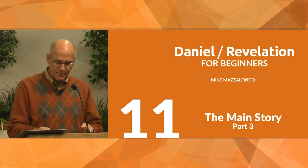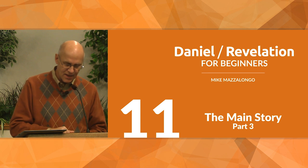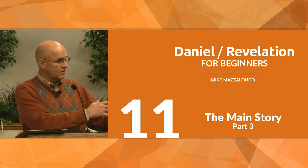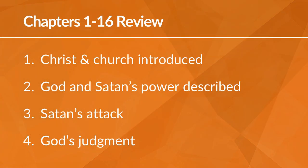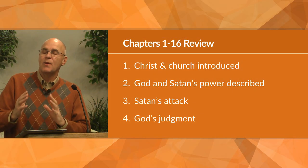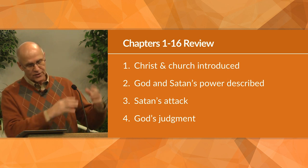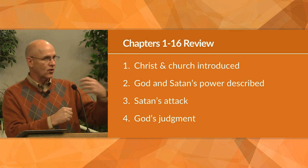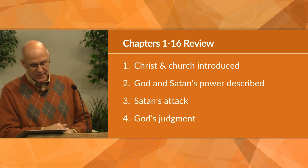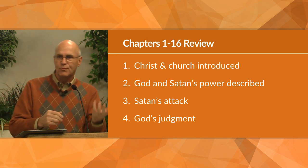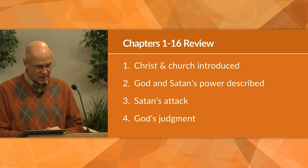So the symbols get a little confusing, but this is the basic story they tell. So far in the story: Christ and His church have been introduced. Both God's power — remember the parade of power — and Satan's power have been described. The seven trumpets reveal God's warning and power. And Satan and the allies he's recruited have been described: the dragon and the beast and the false prophet.